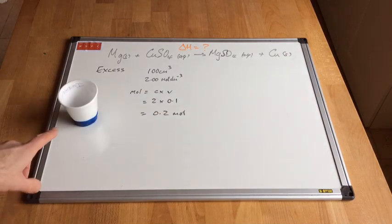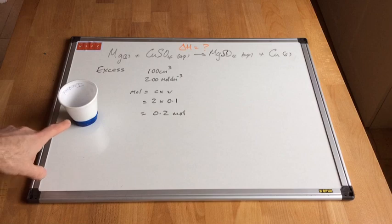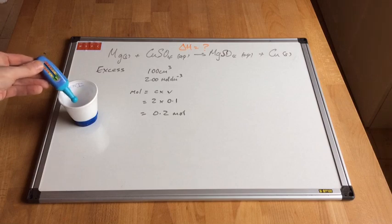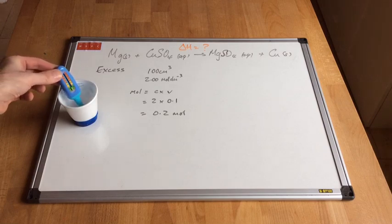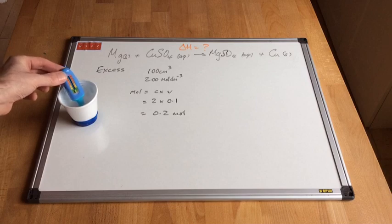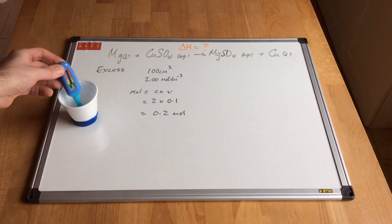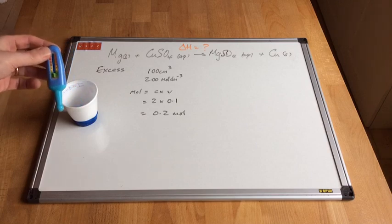So I've got my reaction vessel here — this is a polystyrene cup. Inside the polystyrene cup we've got our 100 centimetres cubed of the 2 moles per decimetre cubed copper sulphate solution. The first thing I'm going to do is record the temperature of the solution, so I'll put my thermometer in and give it a little while to stabilise. That's reading 20 degrees C.